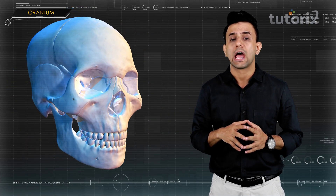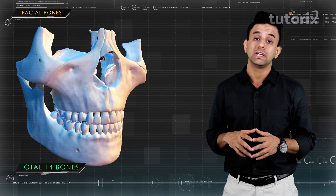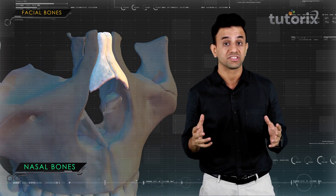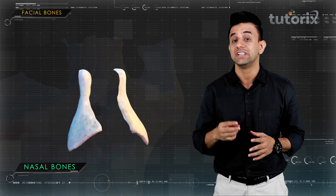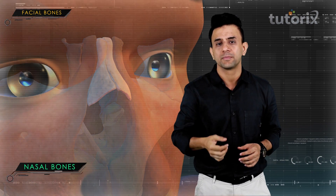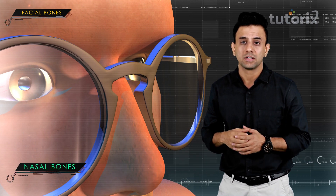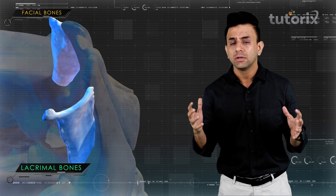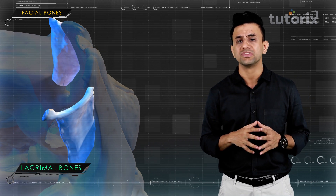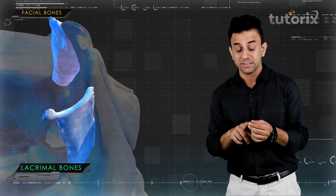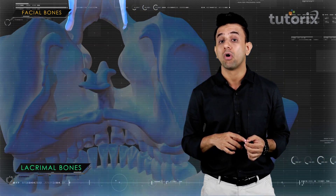Now we shall talk about the bones of the face. The facial bones are 14 in number. The nasal bones are small, rectangular-shaped, and paired — two in number. They form the bridge of the nose. The lacrimal bones are also paired — two in number — and are the smallest bones of the face. They are very thin, resembling a fingernail in size and shape, and are present posterior and lateral to the nasal bones, forming the medial wall of each orbit.